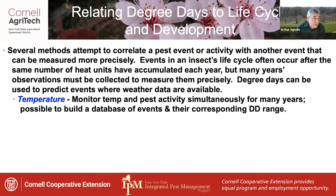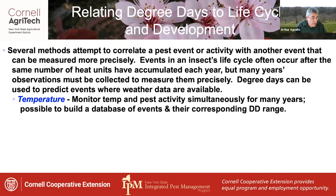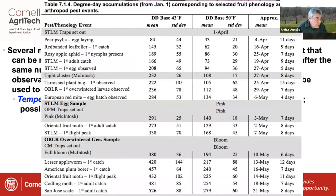If you monitor the temperature and pest activity simultaneously for many years, it's possible to build a database of events and their corresponding degree day range. We include this table in the pest management guidelines, using this database to give a general schedule of things happening with pest biology and tree development in the orchard during the season.